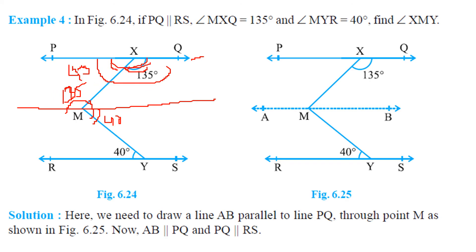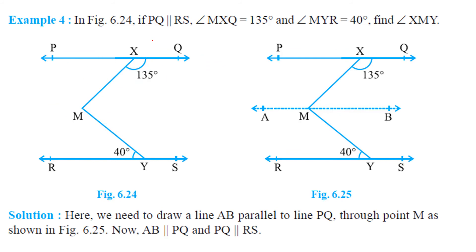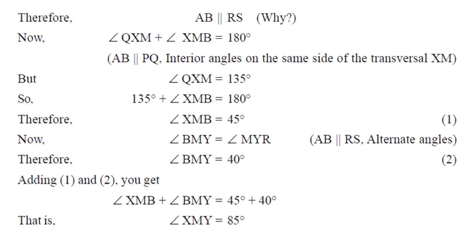This whole angle is 180 degrees. Since this is 135, the remaining angle will be 45 degrees. These two lines are parallel, so by the alternate interior angle property, this angle equals 45 degrees and the other is 40 degrees. The addition of 45 and 40 gives us 85 degrees. So angle XMY is 85 degrees.